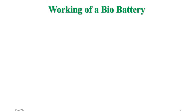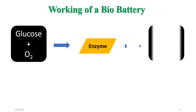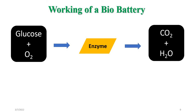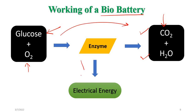Now we will see the working of bio-batteries. Glucose, in the presence of oxygen and with the help of enzymes, is converted into carbon dioxide and water molecules. Along with this, the enzymes produce electrical energy — that electrical energy is nothing but the output of bio-batteries. This is the actual working: glucose and food consumed, in the presence of oxygen and enzymes, generates bio-energy. The byproduct — carbon dioxide and water — is eco-friendly and can be reutilized or recycled by plants.